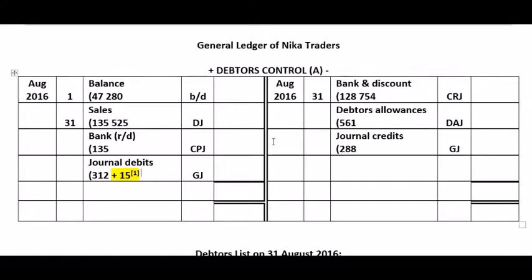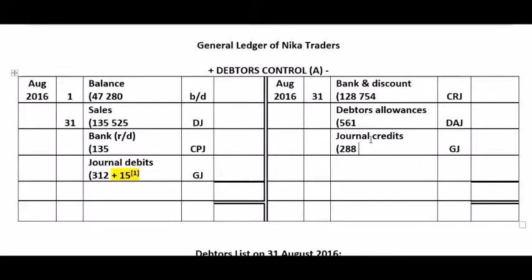When we write an account off as bad debts, we do it in the general journal but we credit debtors control. The reason it goes to the credit side is because we will never see this money — we take it out of debtors control and the company carries this loss as an expense. So our total journal credits in the general journal will be more — there would have been one more credit of 180 Rand.